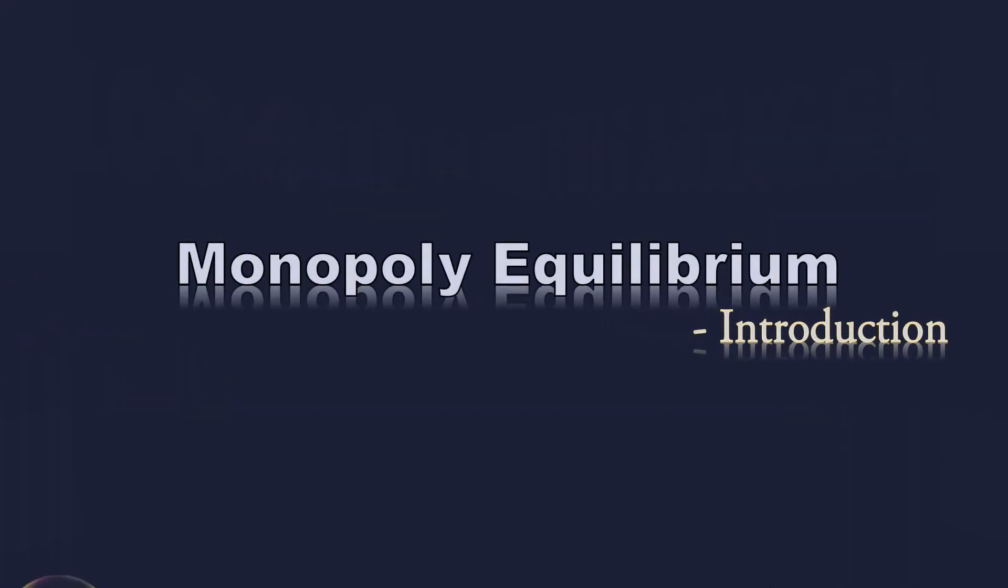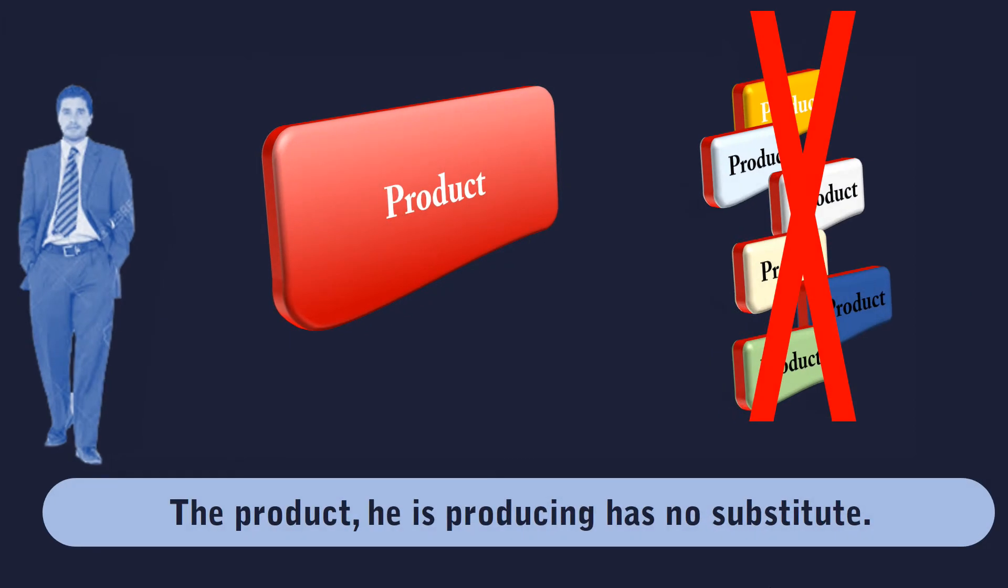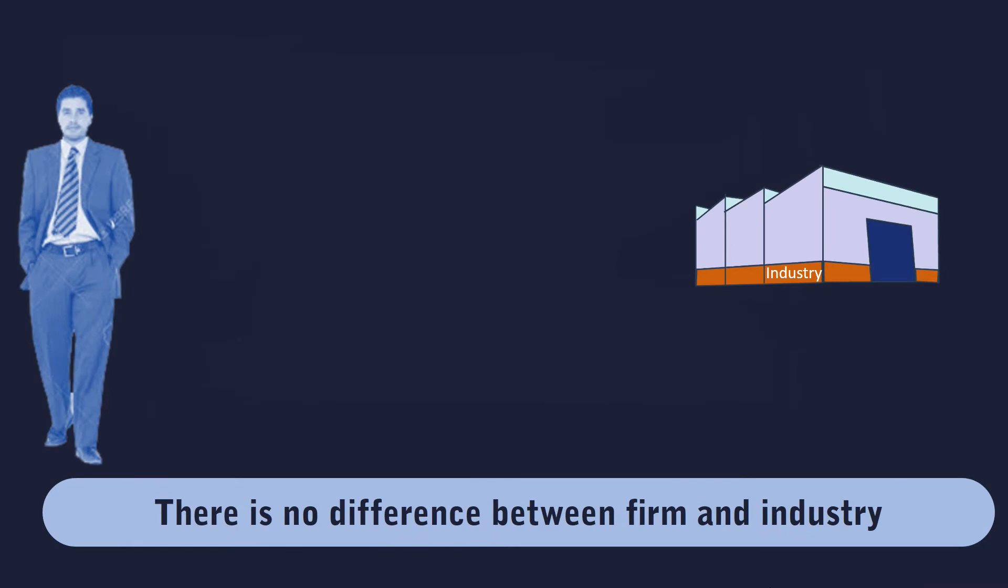Monopoly Equilibrium Introduction. Monopolist is a single producer. The product he is producing has no substitute. There is a single firm with no competitor.